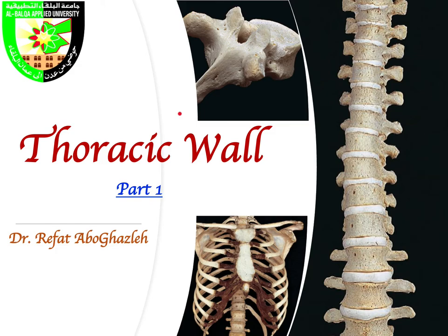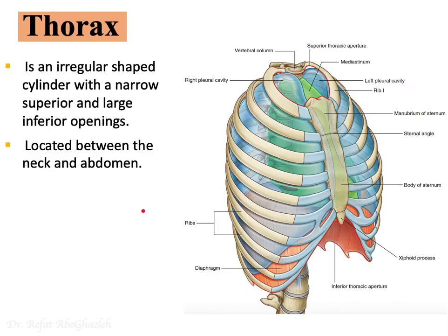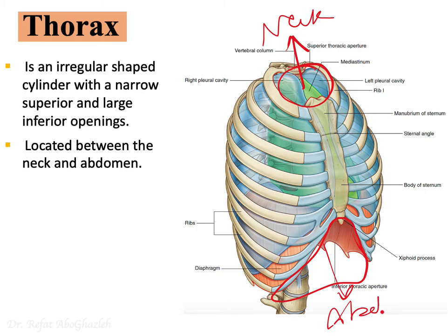Welcome everyone to another lecture in anatomy. Today I would like to talk about the anatomy of the thoracic wall in two parts. Let us define the thorax — it indicates an irregular-shaped cylinder with a narrow superior opening and a large inferior opening, connecting the thoracic cavity with the neck above and the abdomen below.